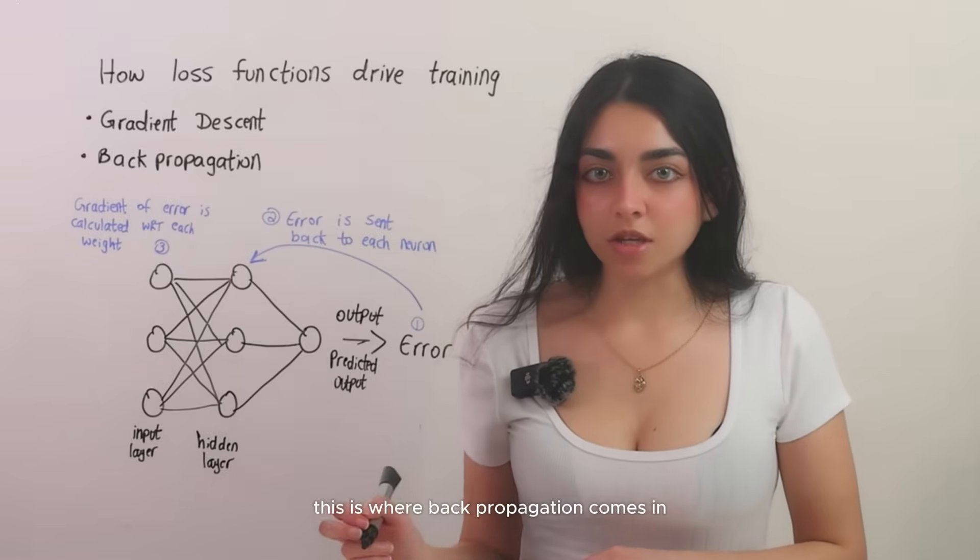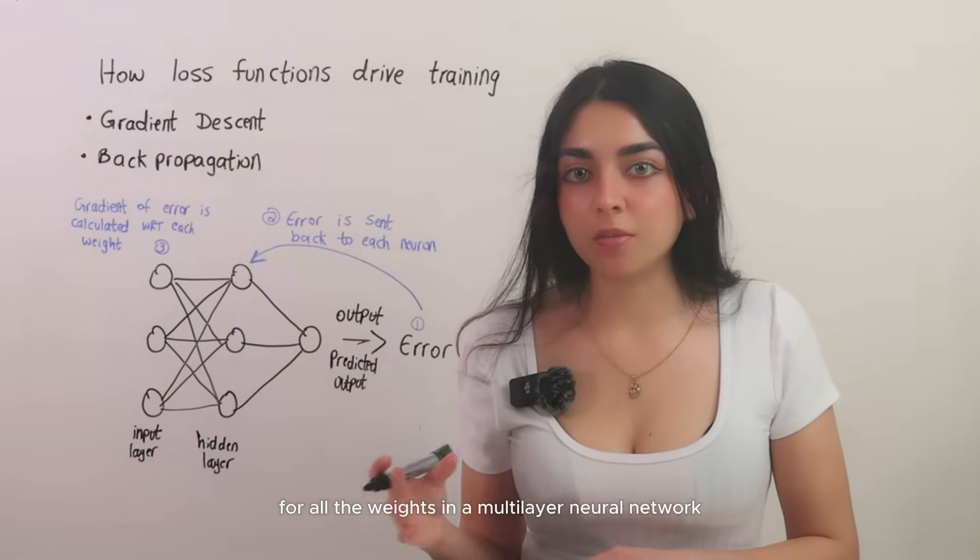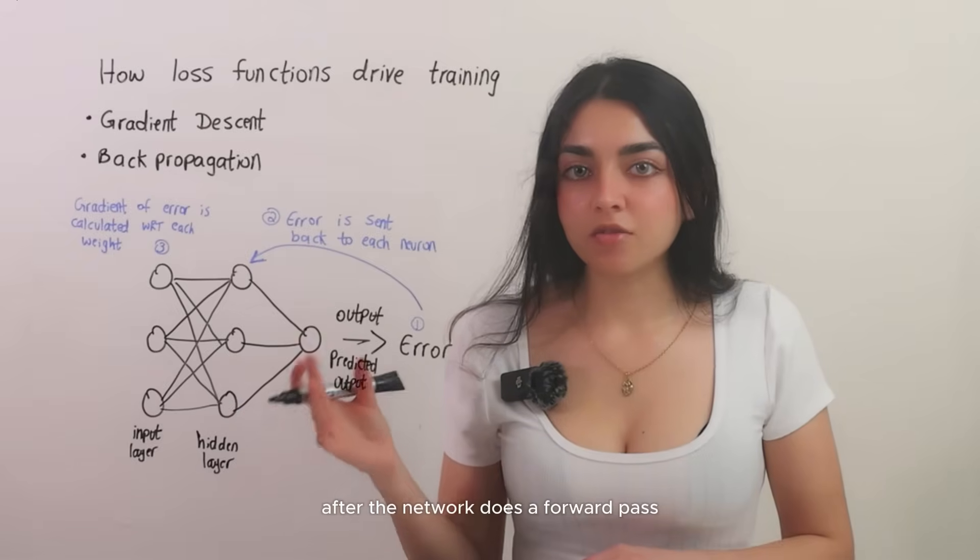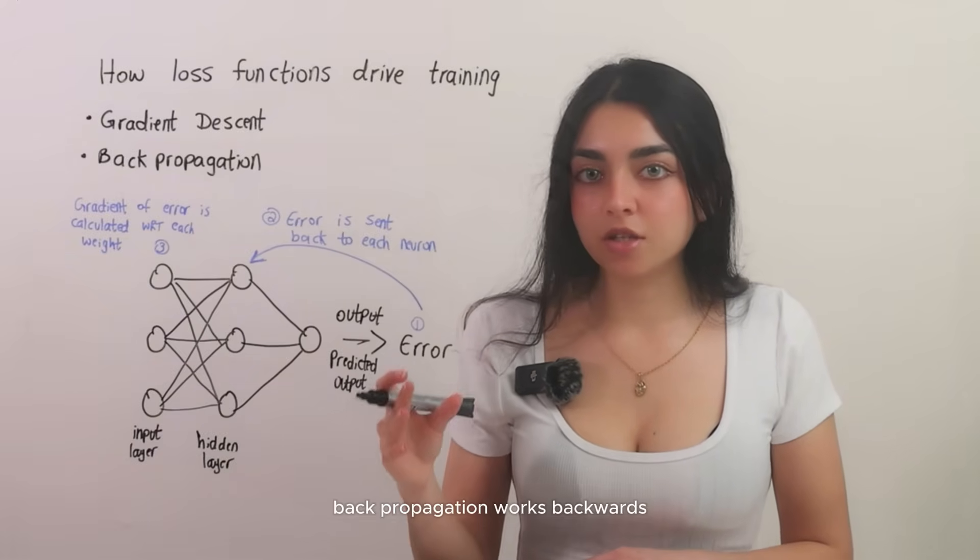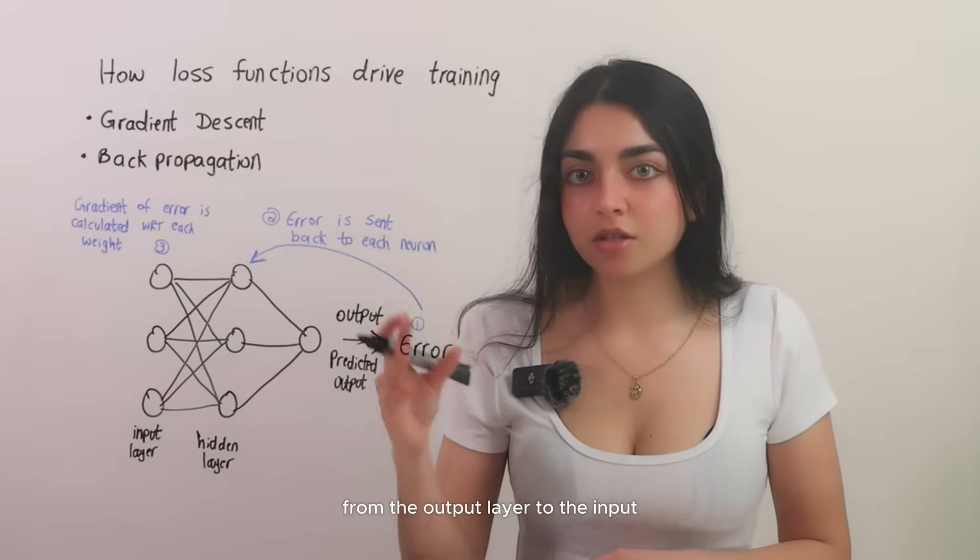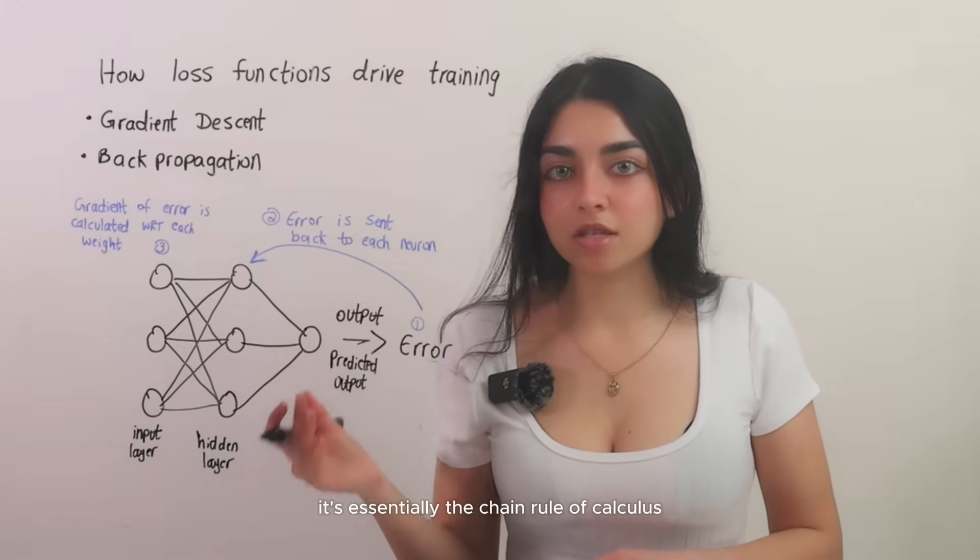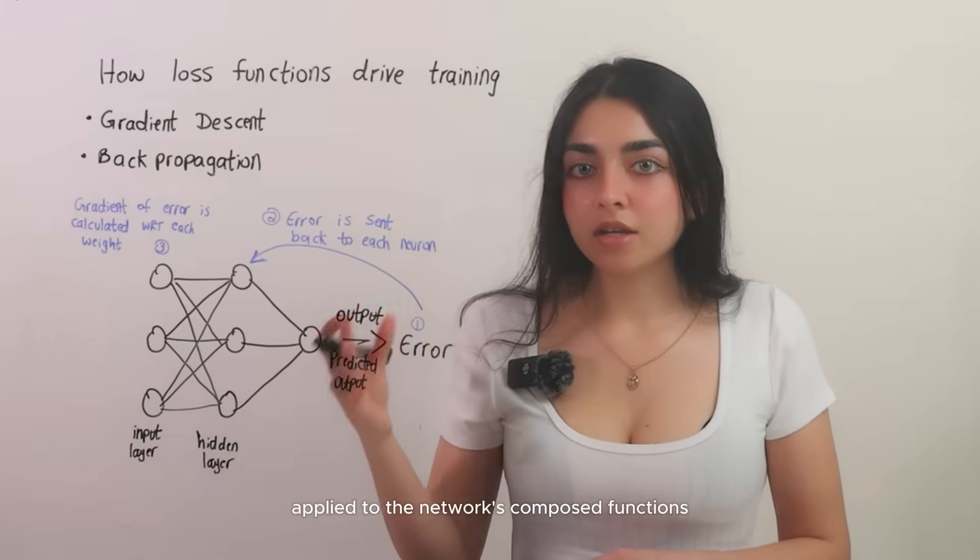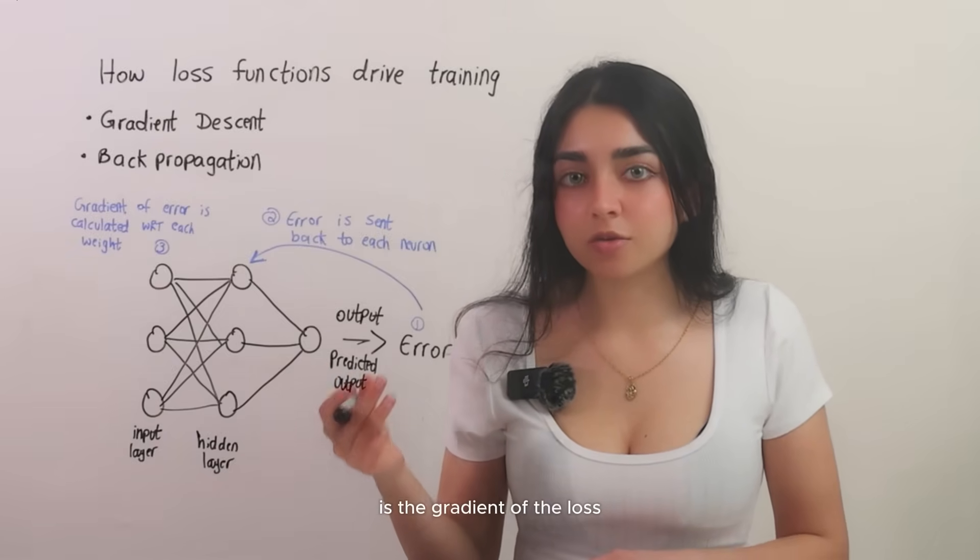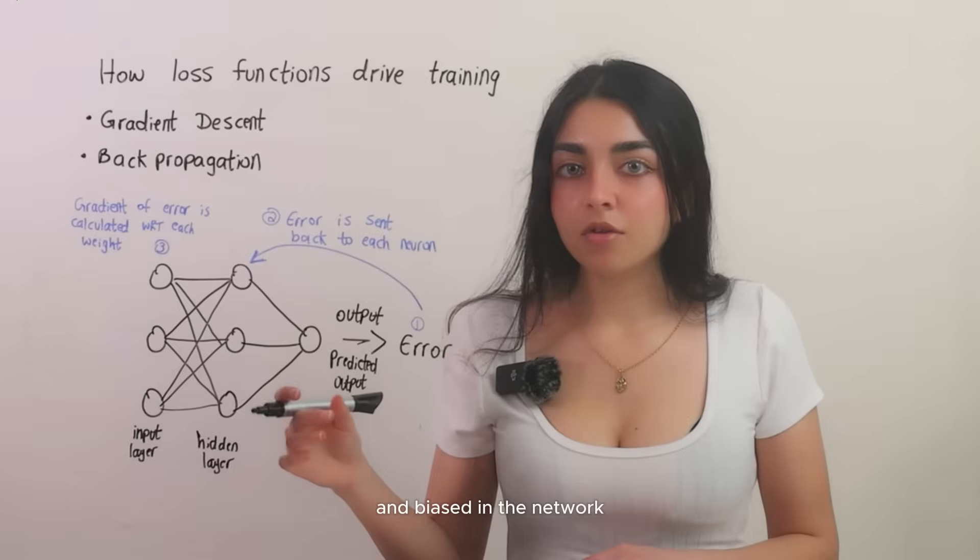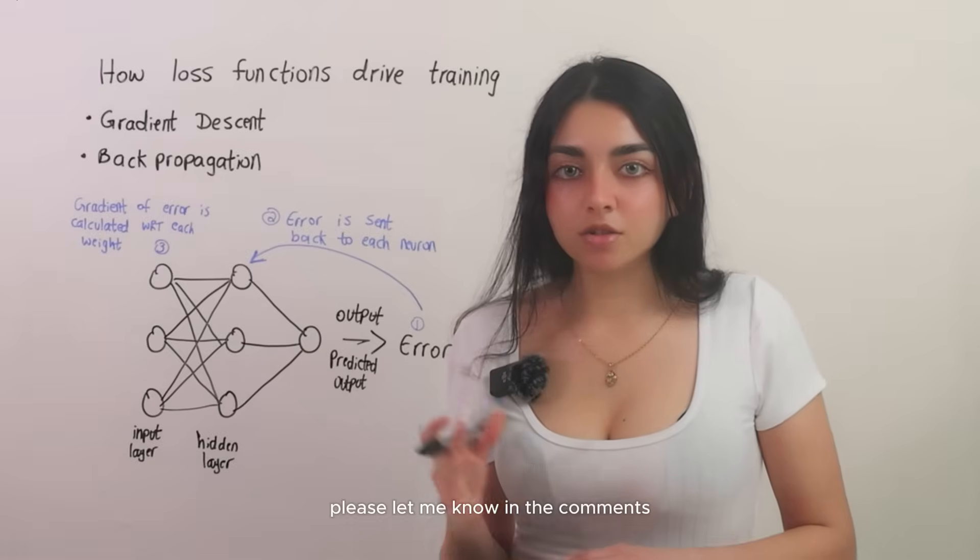This is where backpropagation comes in. Backpropagation is the algorithm that efficiently computes these gradients for all the weights in a multi-layer neural network. After the network does a forward pass on some training data and the loss function produces a loss value, or the error, backpropagation works backwards, from the output layer to the input, calculating how much each weight contributed to the error. It's essentially the chain rule of calculus applied to the network's composed functions, breaking down the loss derivative layer by layer. The result of backpropagation is the gradient of the loss with respect to every weight and bias in the network. If you'd like me to go into more details about backpropagation in a future video, please let me know in the comments.